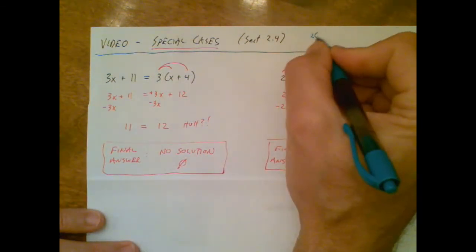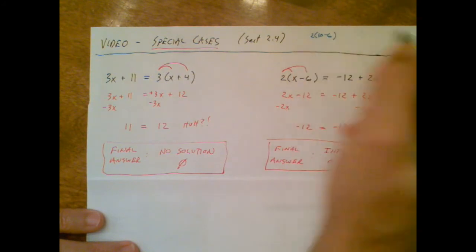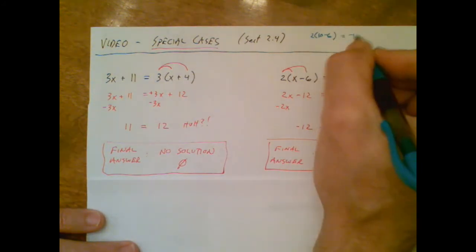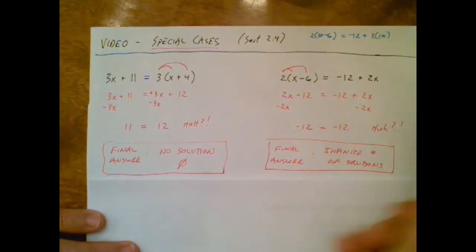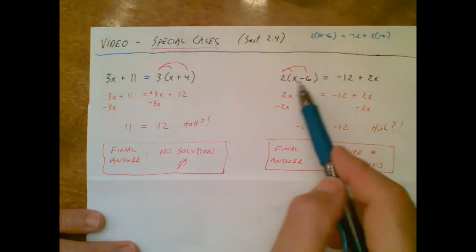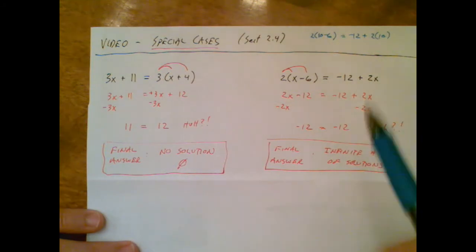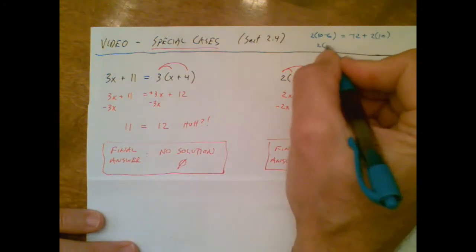2 times 10 minus 6 equals negative 12 plus 2 times 10. So I just pulled the 10 out of thin air. I plugged it in over here and over here. This is 2 times 4.